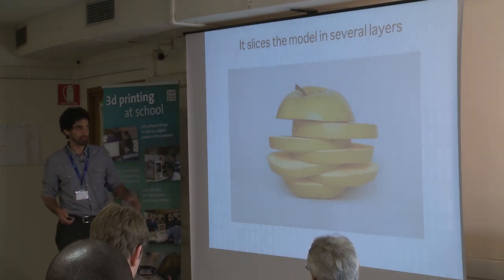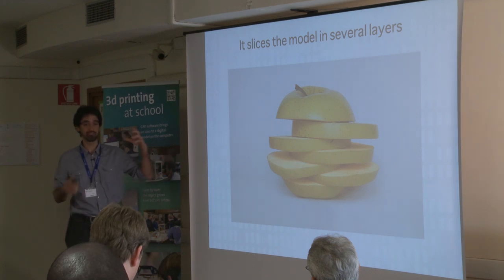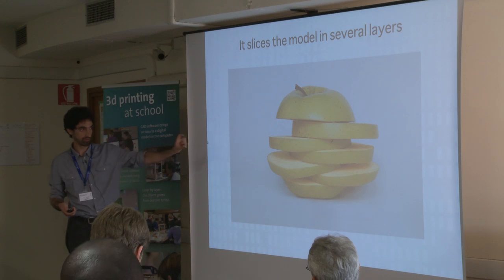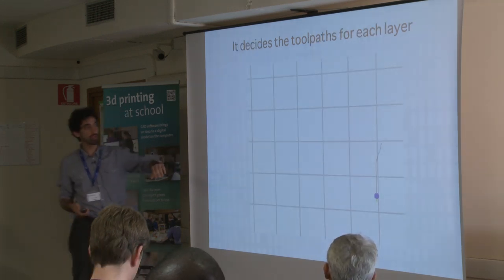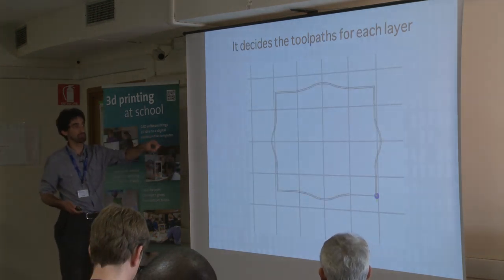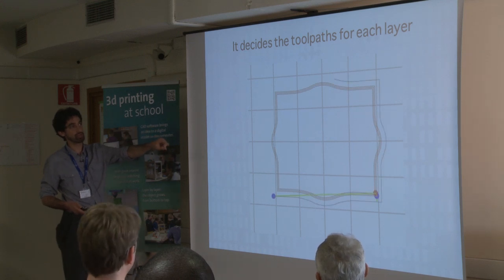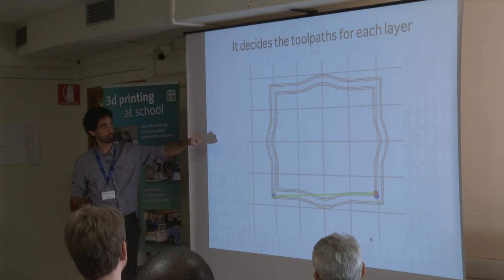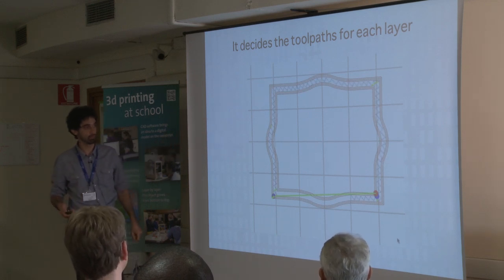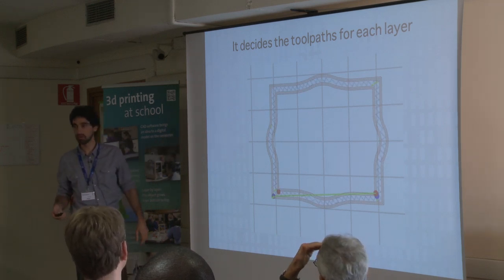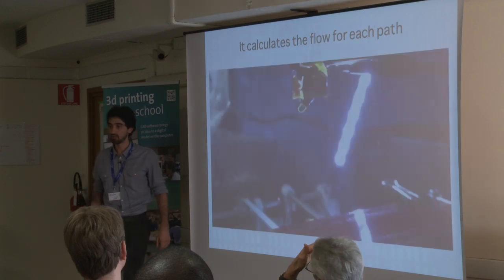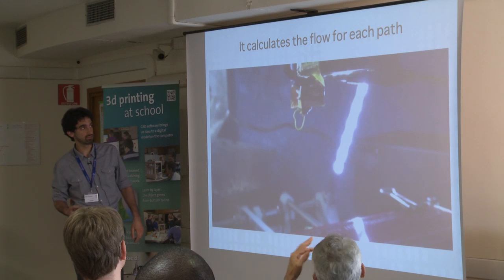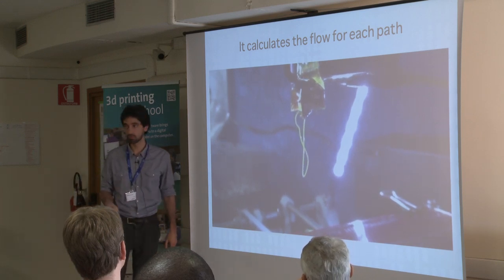What does Slicer do? Slicer takes a model, makes layers according to a configured layer height, and for each layer generates the toolpaths that the printer follows. It makes a bunch of perimeters and then fills the internal areas according to your settings. For each path, it calculates the amount of material to push through the extruder to make the trace wider or thinner.